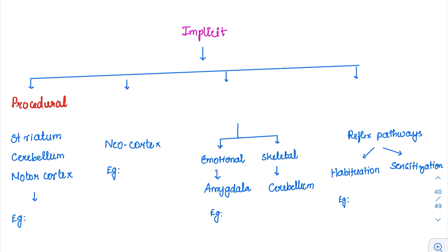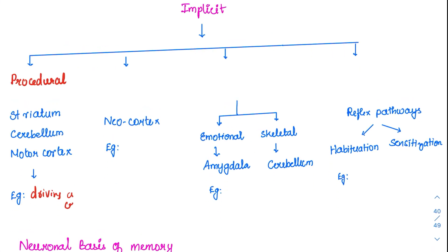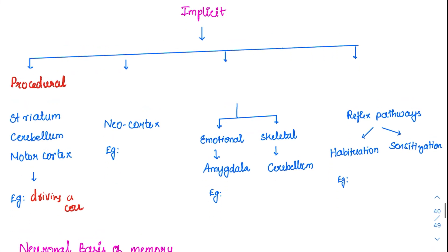The best example for procedural memory is driving a car. For the initial few days you will be very cautious, but once you learn it properly, sometimes you will remember starting from home and reaching the destination without remembering anything in between — yet you would have braked properly and reached every place correctly. This is procedural memory: you do the procedure and become an expert at it.